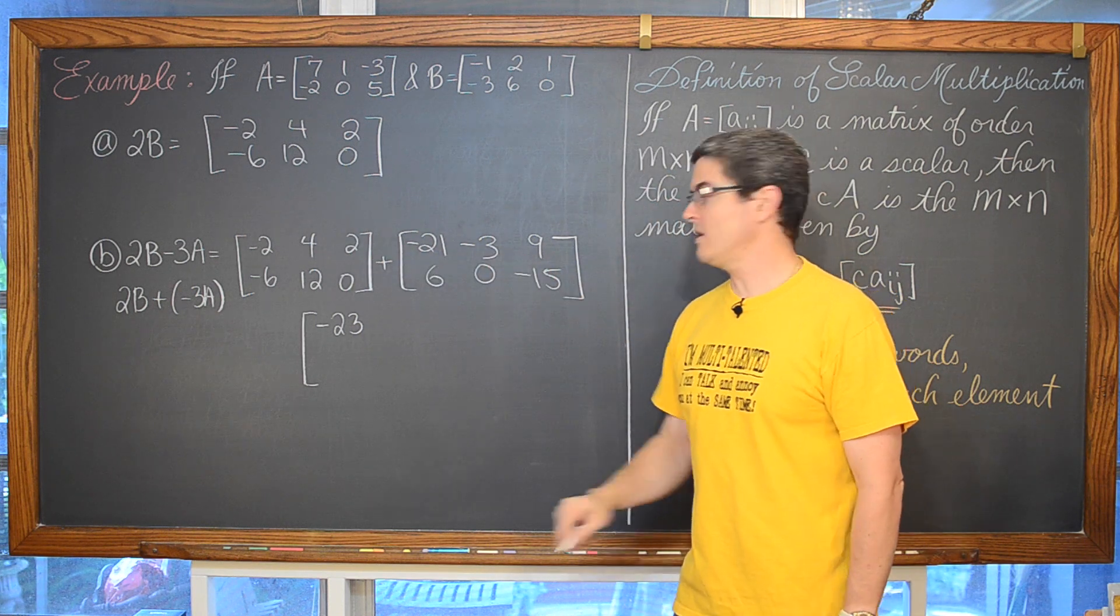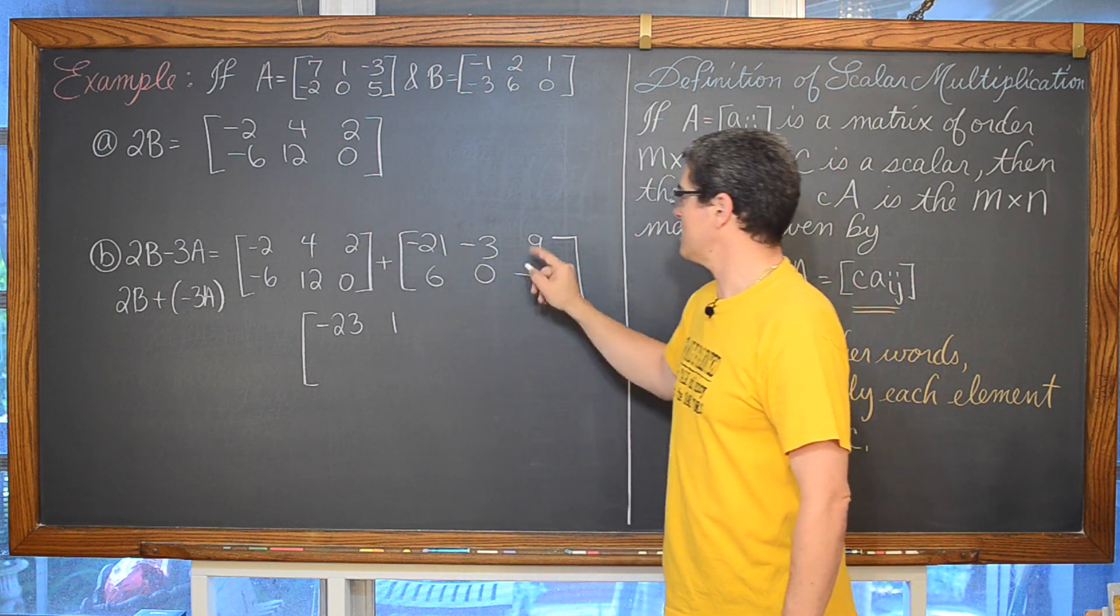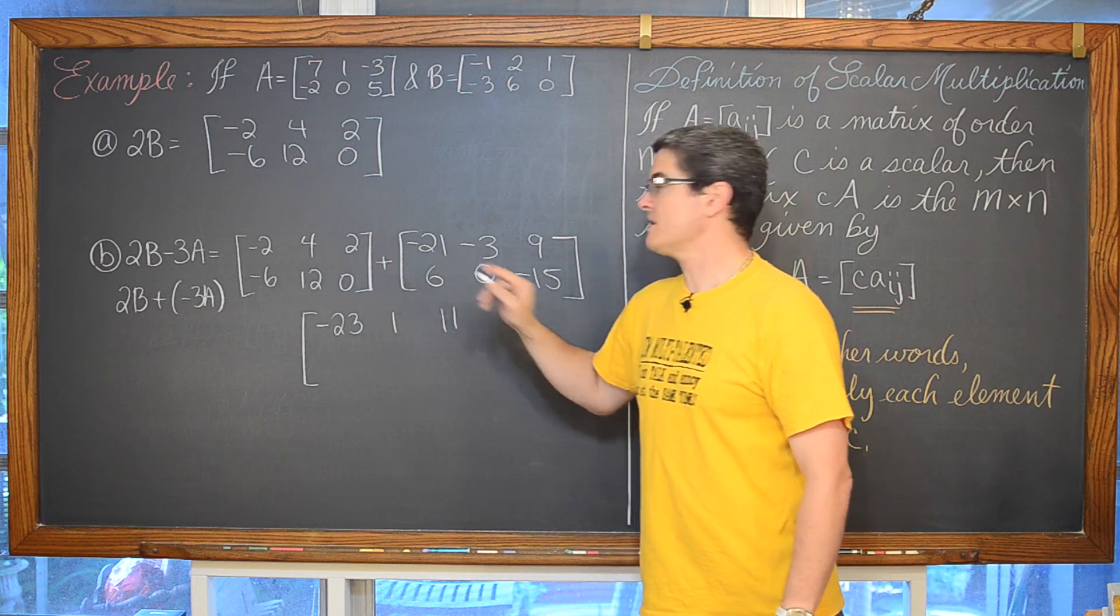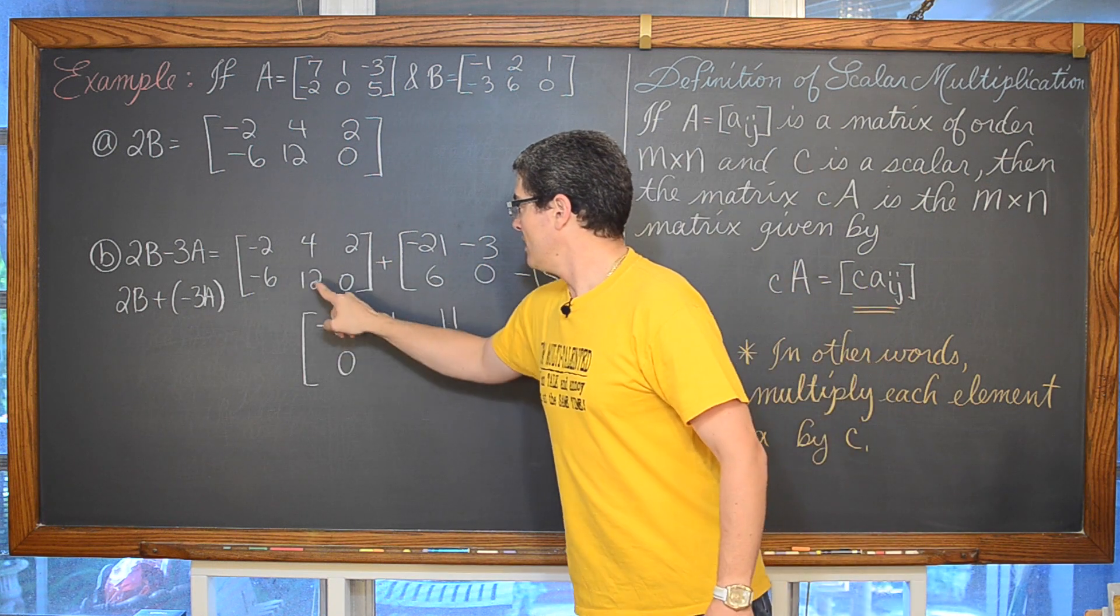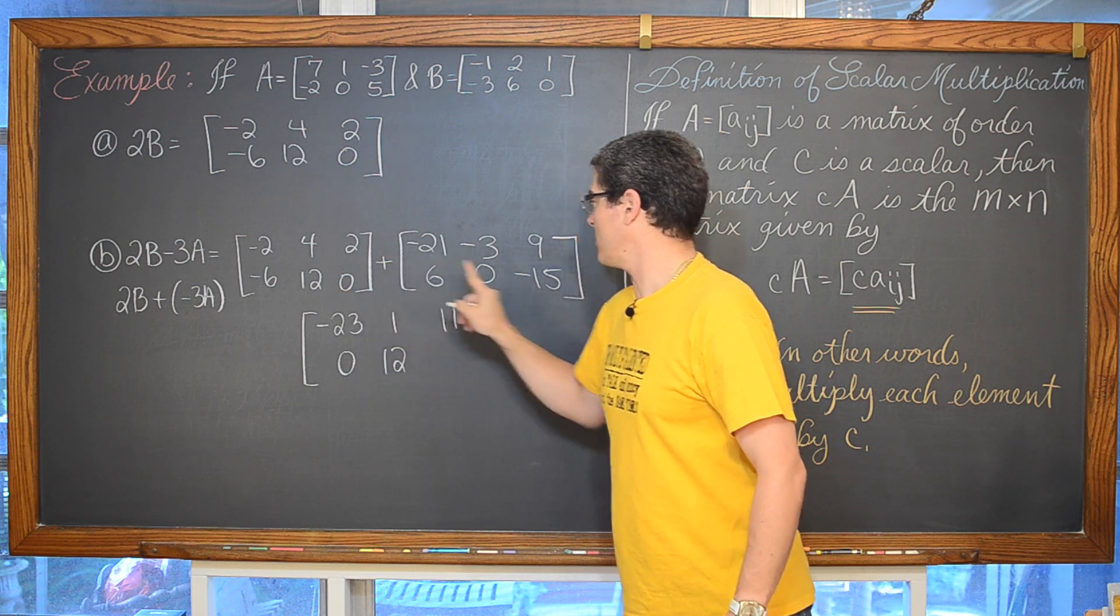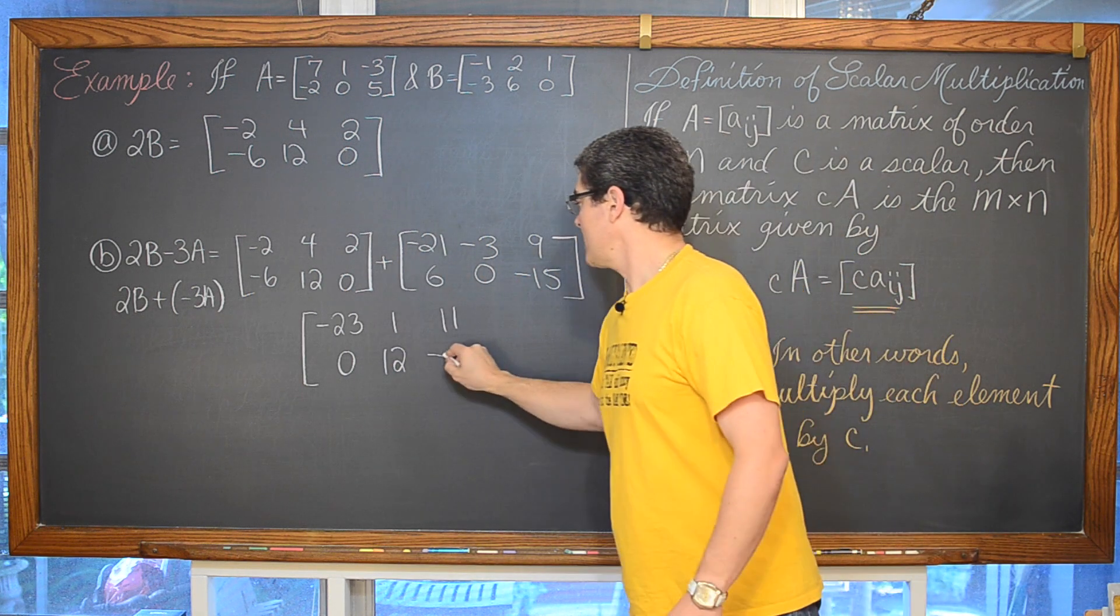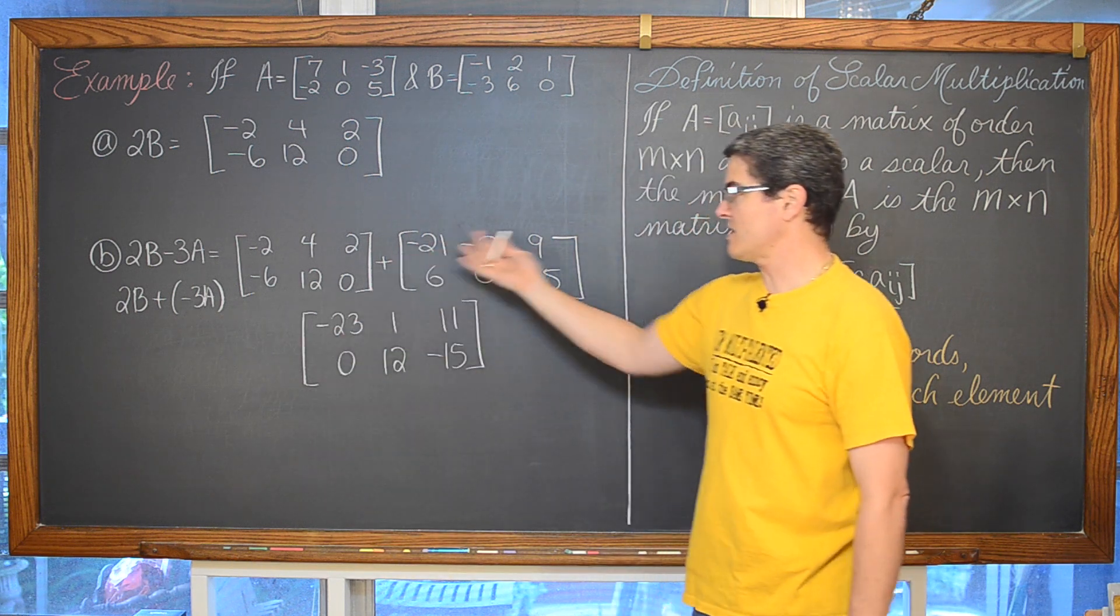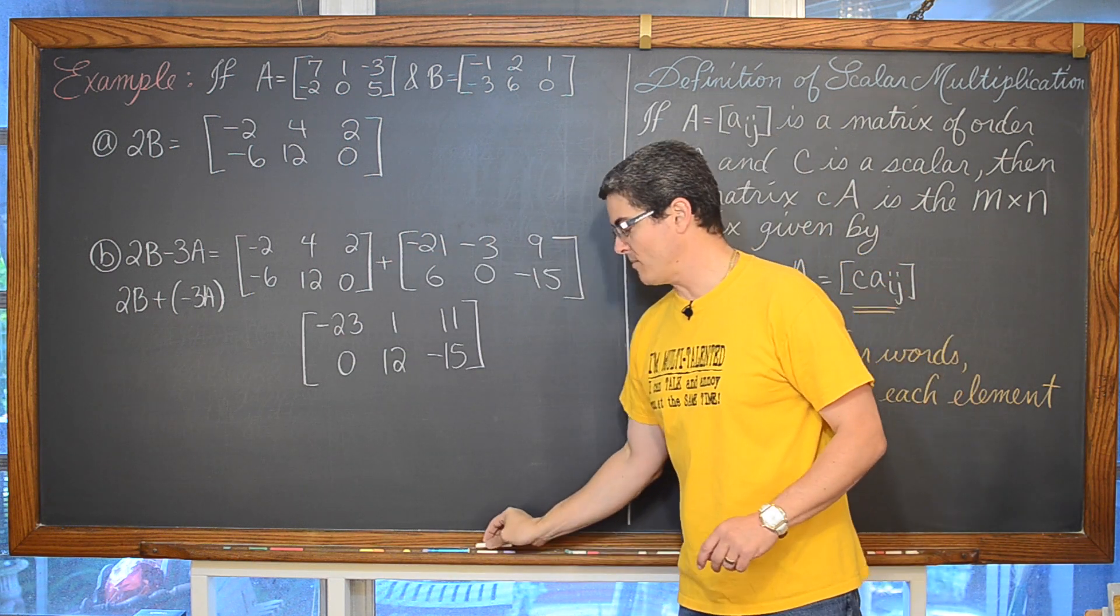4 plus negative 3 is equal to 1. 2 plus 9 is 11. Negative 6 plus 6 is going to be 0. 12 plus 0 is going to be 12 of course. And then 0 plus negative 15 is negative 15. And that is another example of adding matrices of the same order.